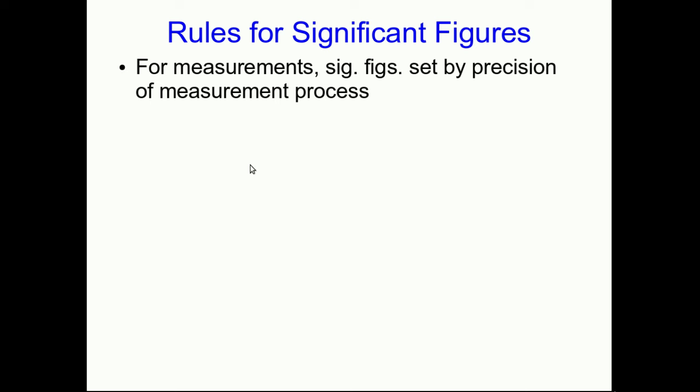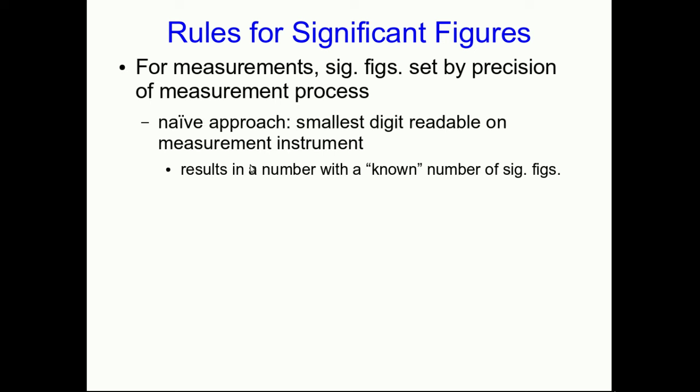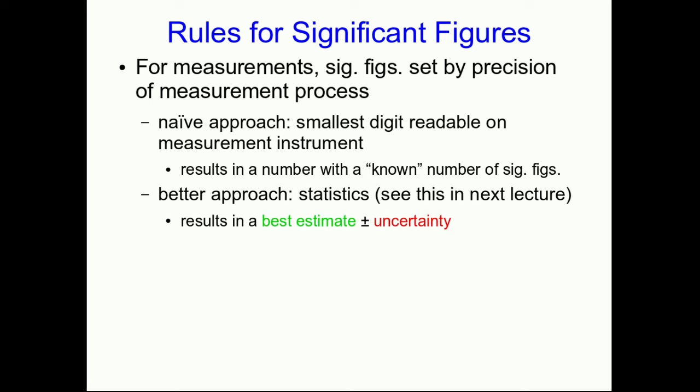As we've just seen, when we make measurements, the number of significant figures in the measurement is set by the precision of our measurement process, and if all we're doing is taking a single measurement, then we can naively say that it's the smallest digit readable on the measurement instrument. Now, that doesn't always work, right? You know if you measure the height of a door with a measuring tape multiple times, you may not come up with quite the same result every time, and so maybe that last digit is not quite as trustworthy as you might hope. But let's go with it for now. So you have a number of known significant figures. The better approach, which we'll see next lecture, is that you do make multiple measurements, and you use some simple statistics to figure out what your precision is.